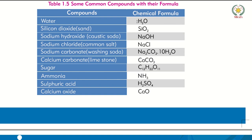Calcium carbonate is CaCO3. Sucrose (used for eating/sugar) is C12H22O11. Ammonia, used as a fertilizer, is NH3. These are some examples of chemical formulas of different compounds.